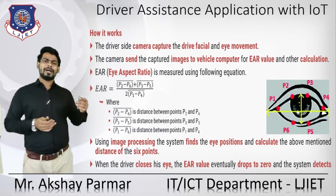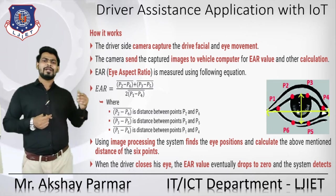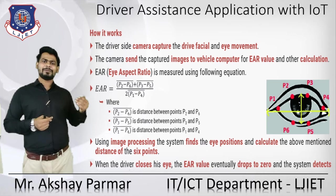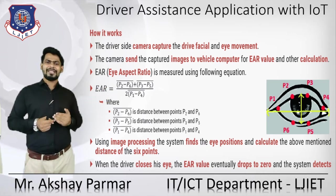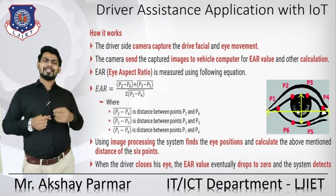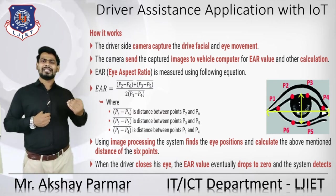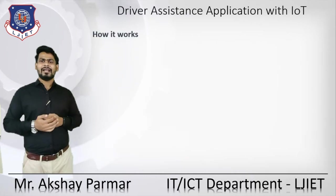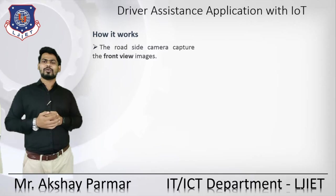When the eye is closed, P2 equals P6 and P3 equals P5 — so both those distances become zero. P1 minus P4 remains unchanged, but because P2–P6 and P3–P5 are both zero, the numerator becomes zero. That's how the driver assistant application works with the help of image processing to detect eye closure.